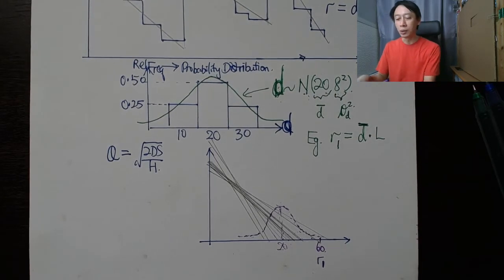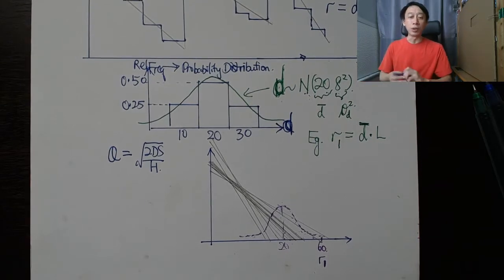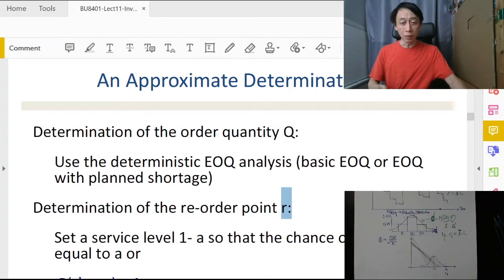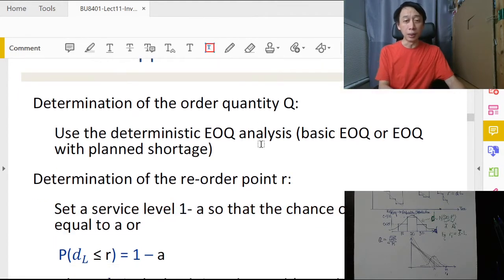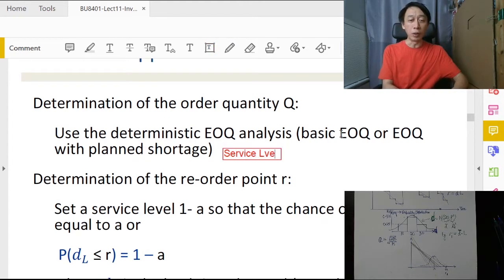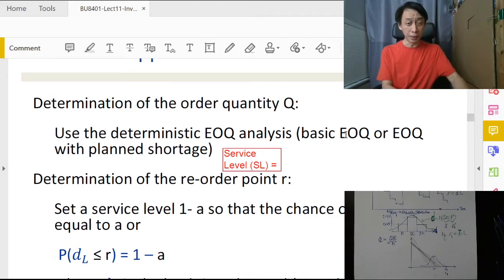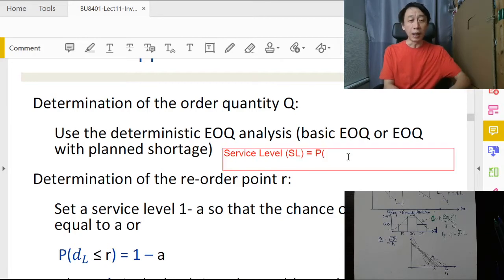To manage this problem by not mechanically following or extending from the constant demand EOQ model, we need to introduce a concept called the service level. So what is service level? Service level is basically a probability.